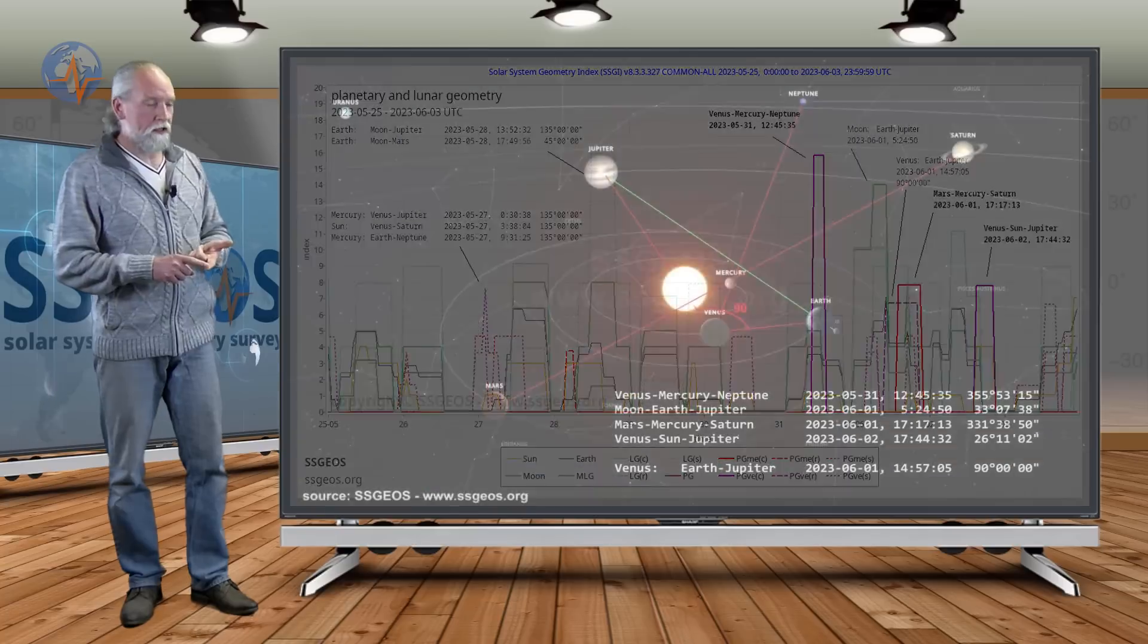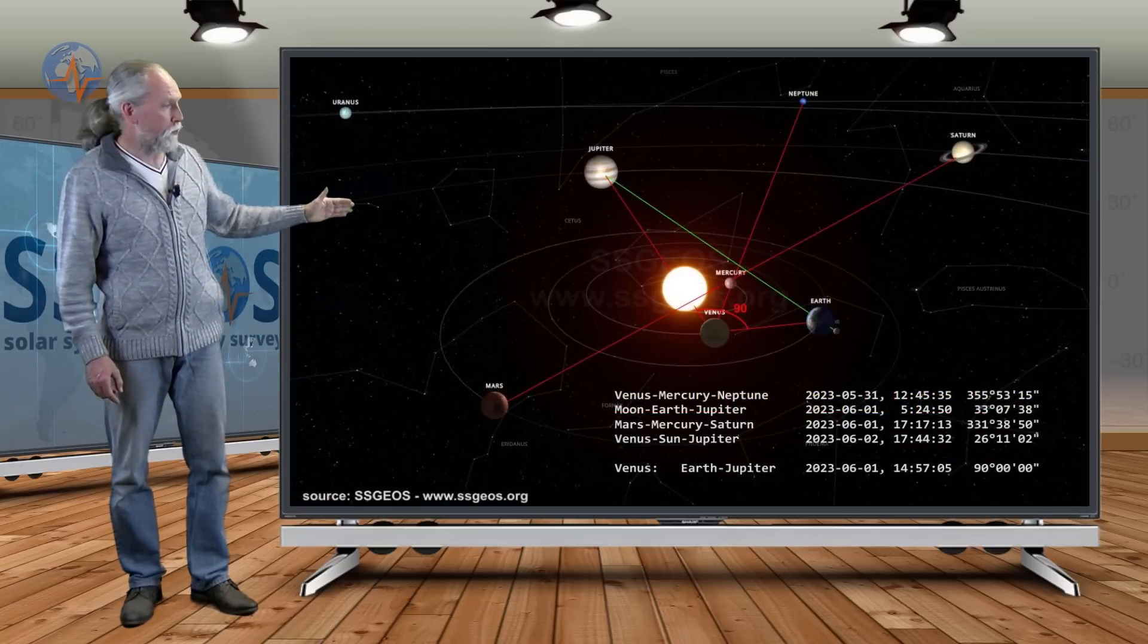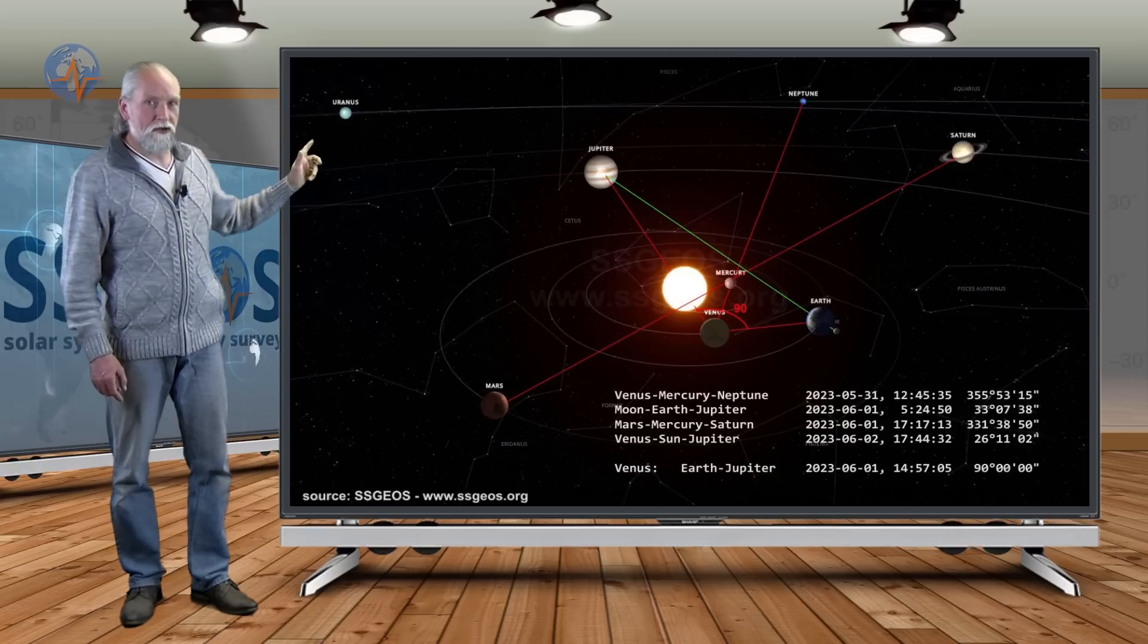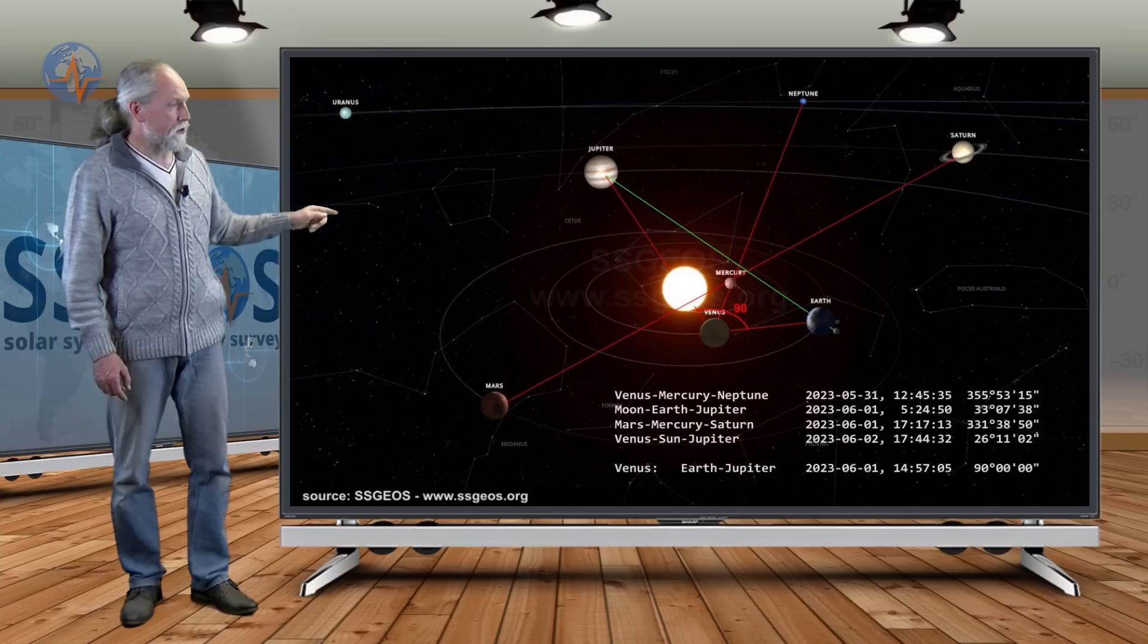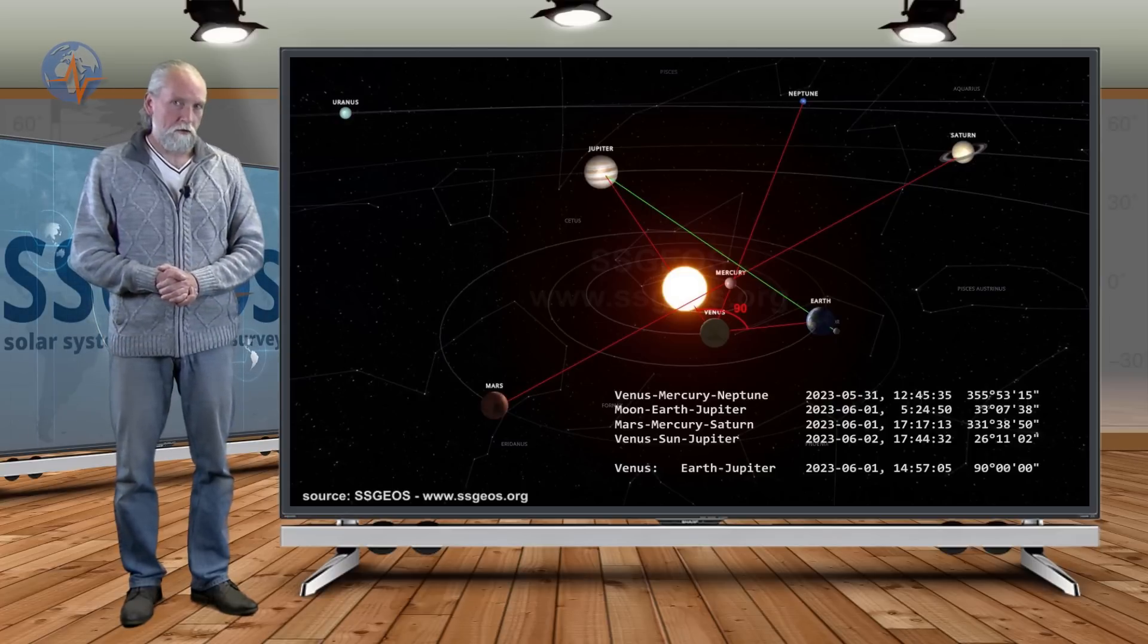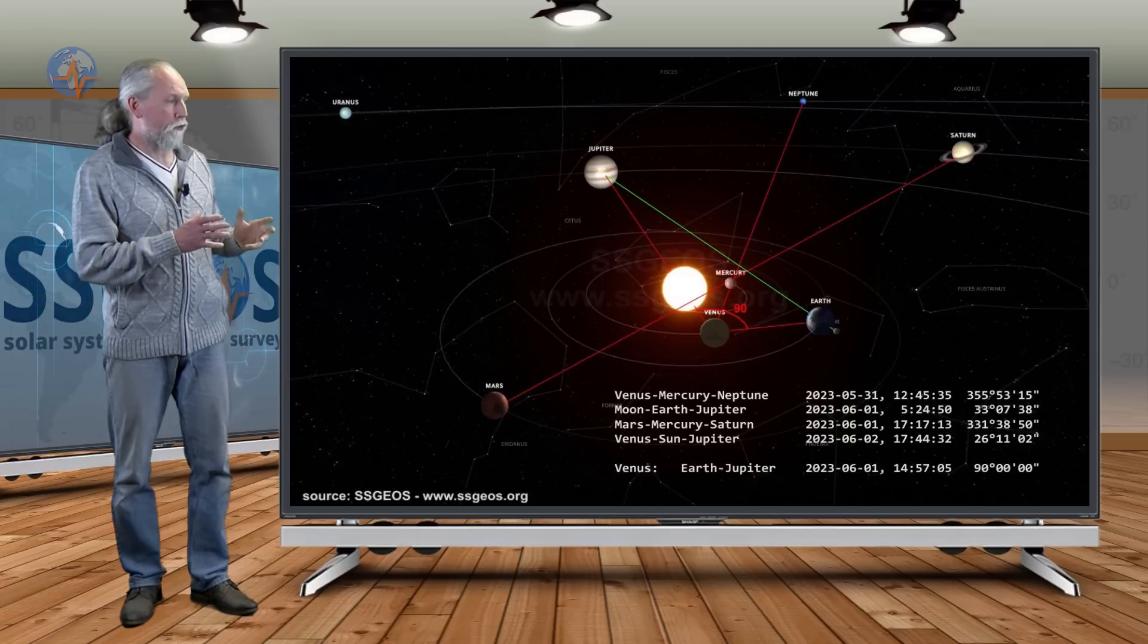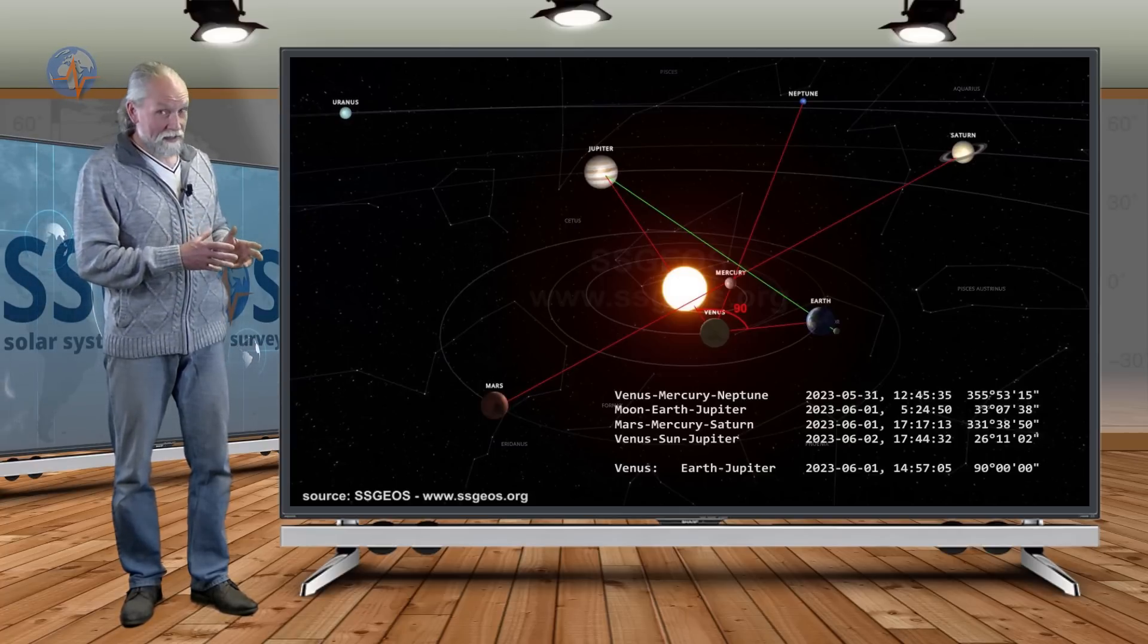If we look at the solar system we see Mars, Mercury and Saturn coming up in conjunction. We have Venus, Mercury and Neptune coming up and then also Venus, Sun and Jupiter. All three conjunctions are critical and in addition we have a 90 degree angle with Venus involving Earth and Jupiter and that all happens from May 31st to June 2nd.